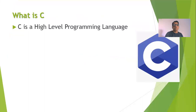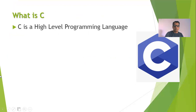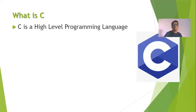Let us initially begin with what we mean by a C Programming Language. C Programming Language is a high level programming language. When we talk with each other as human beings, the language that is being used by us — for example, when I am giving this presentation to you, I am making use of English language.